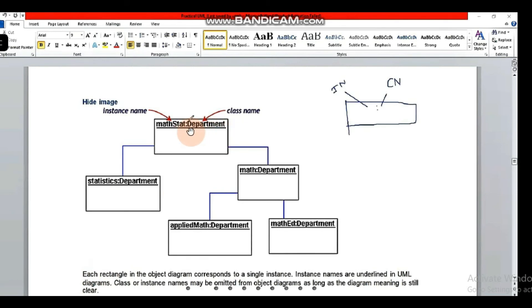So simply in the object diagram, how do you represent the instance name? On the left side is the instance name, and on the right side is the class name.